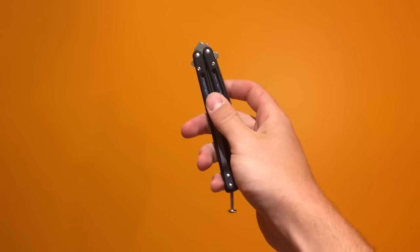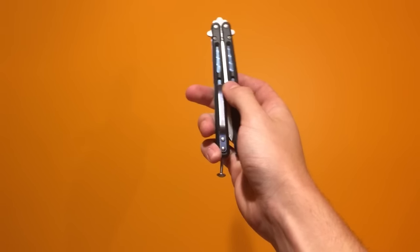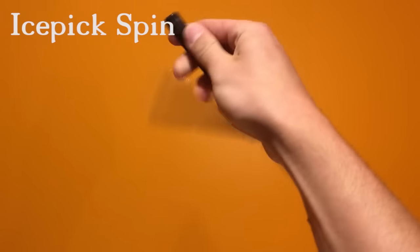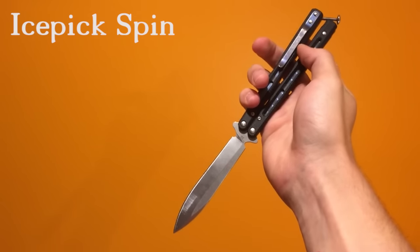Big flips here again, got another tutorial. This one is on the ice pick spin which looks like this. Here is a slow-mo.